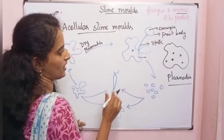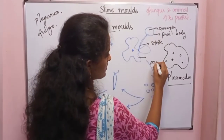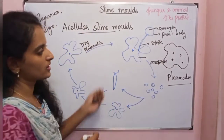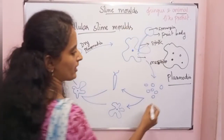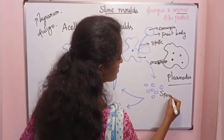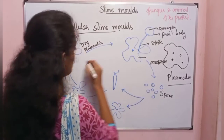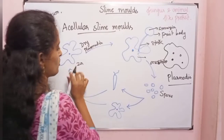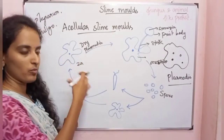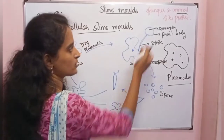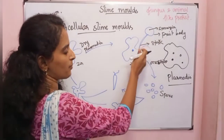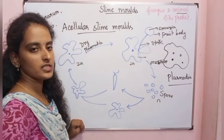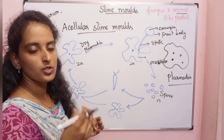The sporangia produces spores through meiosis division. So the sporangia undergoes meiosis, and spores are produced. The diploid stage undergoes meiosis to produce haploid spores.